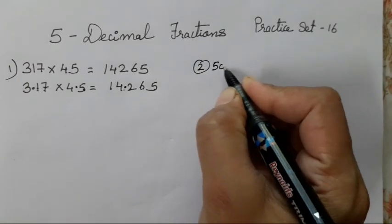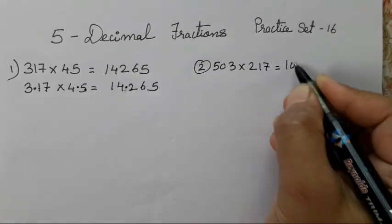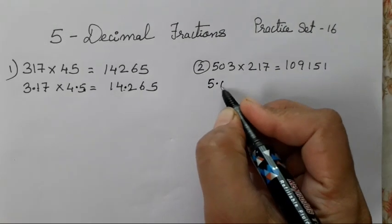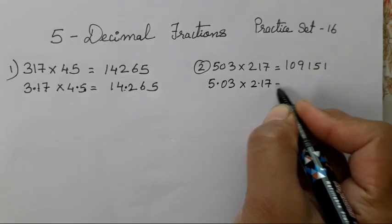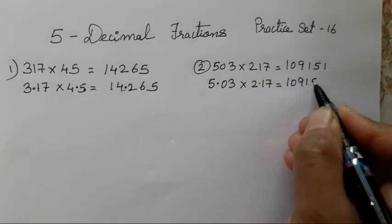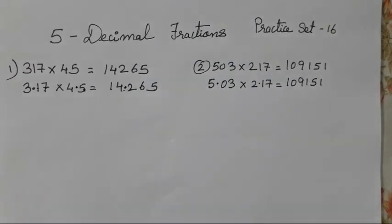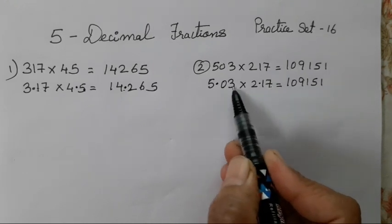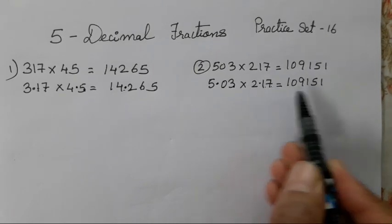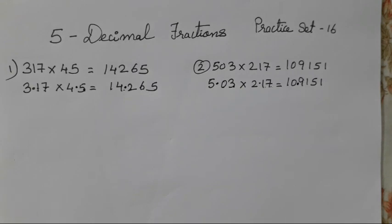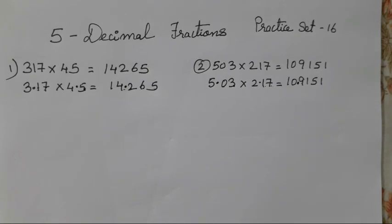The second example: 5.03 into 2.17, and the answer given is 1,091.51. Now, 5.03 into 2.17 — the numbers are the same, so the multiplication answer is also going to be the same. Now we have to add the decimal point. After the decimal point in 5.03 there are 2 digits, and after the decimal point in 2.17 there are also 2 digits. So 2 plus 2 equals 4. Count 1, 2, 3, 4 from the right — the decimal point will come over there. Simple way, and the same method we follow for all remaining questions.